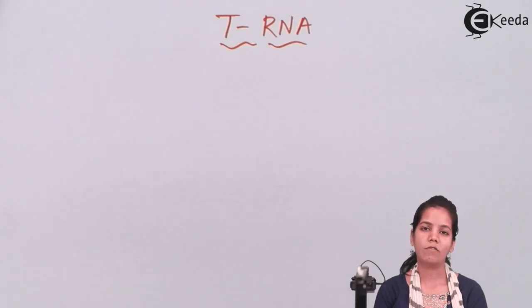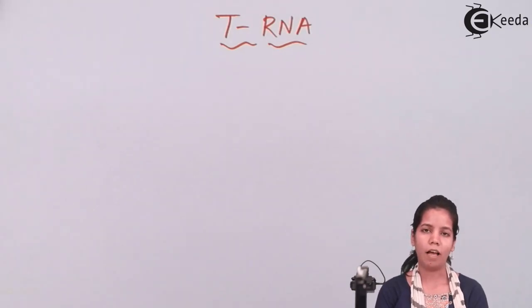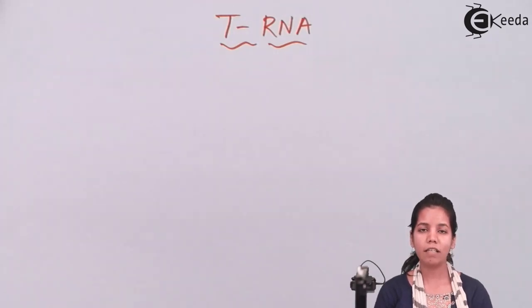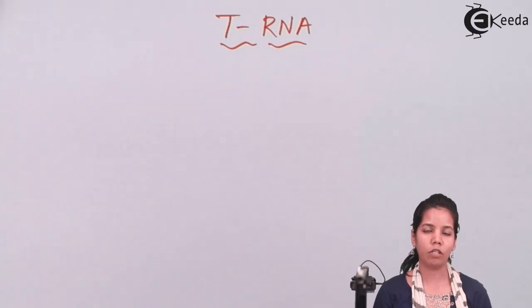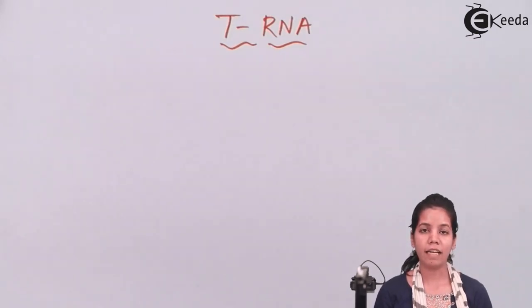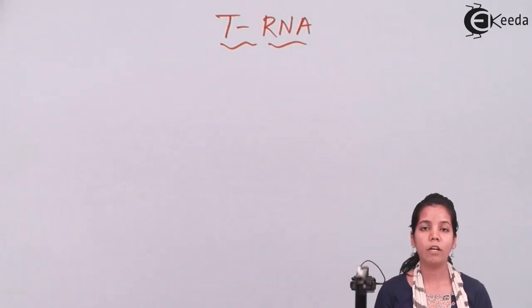tRNA or Transfer RNA is also called Soluble RNA or SRNA, because it is difficult to centrifuge. Whenever you mix mRNA, tRNA and RNA inside a centrifuge machine, it is very difficult to remove tRNA during ultracentrifugation.